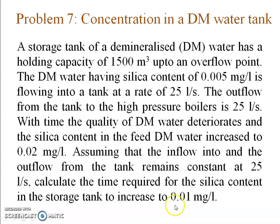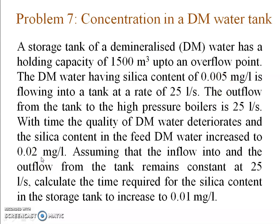Let's start with the first problem: concentration in a DM water tank, where DM water is demineralized water. This DM water is being stored in a storage tank with a capacity of 1500 cubic meters. The DM water coming into the tank has a silica content of 0.005 mg per liter and enters at a rate of 25 liters per second. The outflow goes to high-pressure boilers at 25 liters per second. Over time, the quality of the DM water deteriorates and the silica content increases from 0.005 mg/L to 0.02 mg/L.